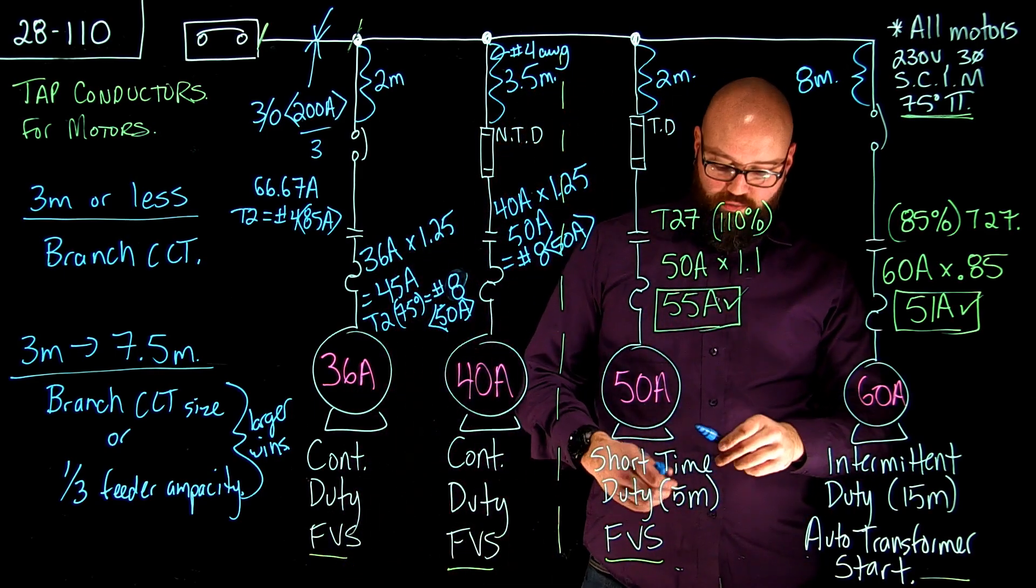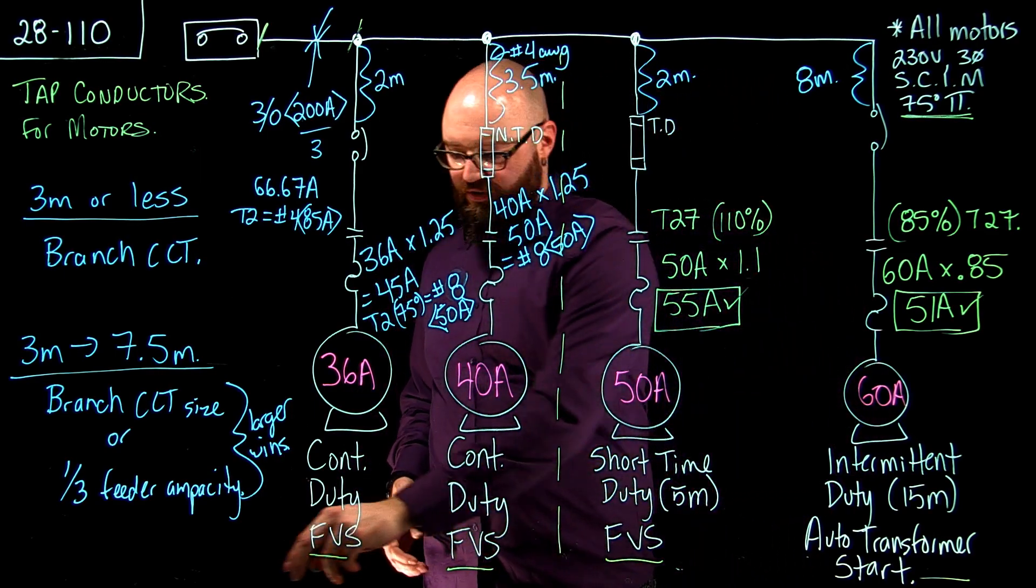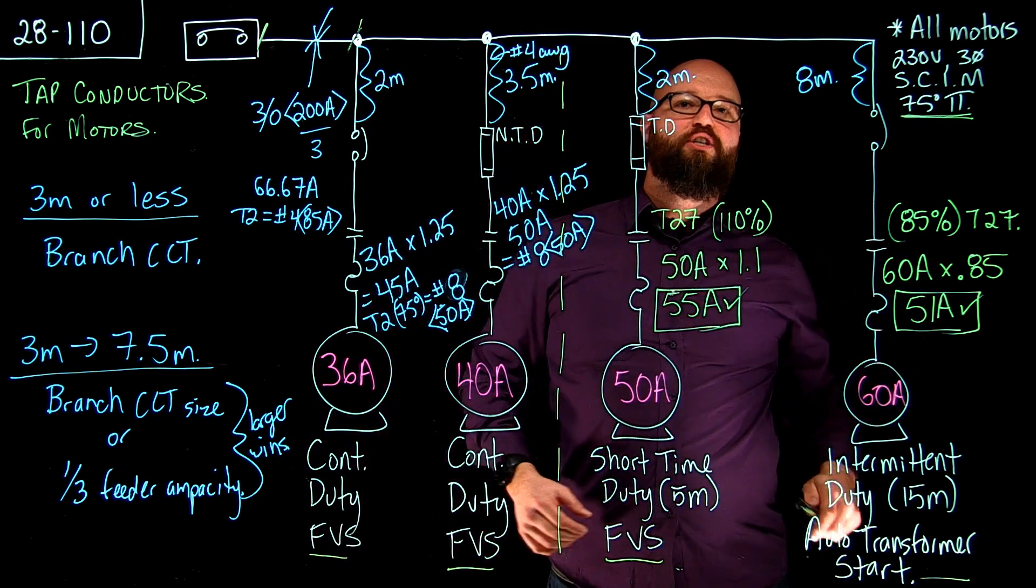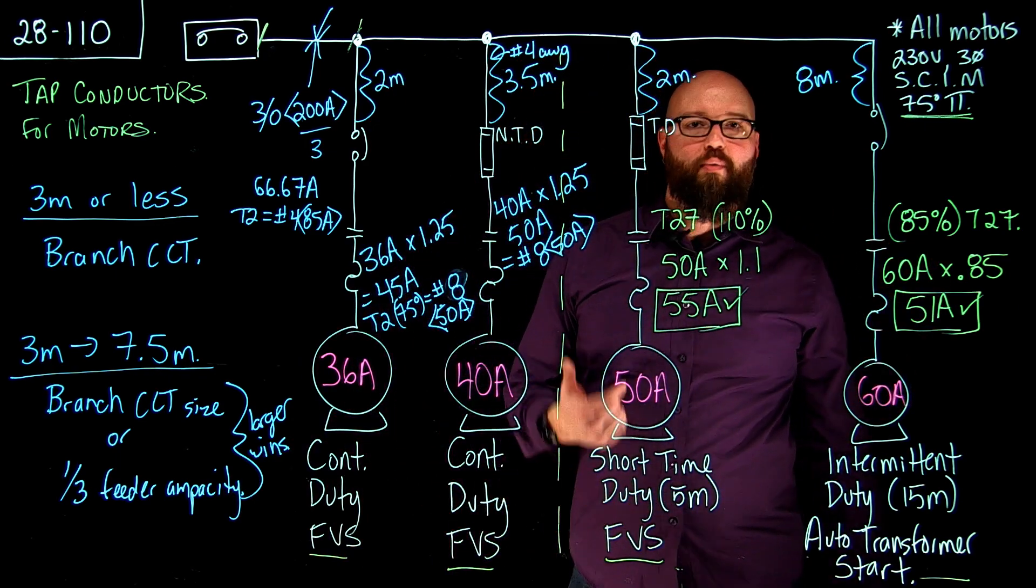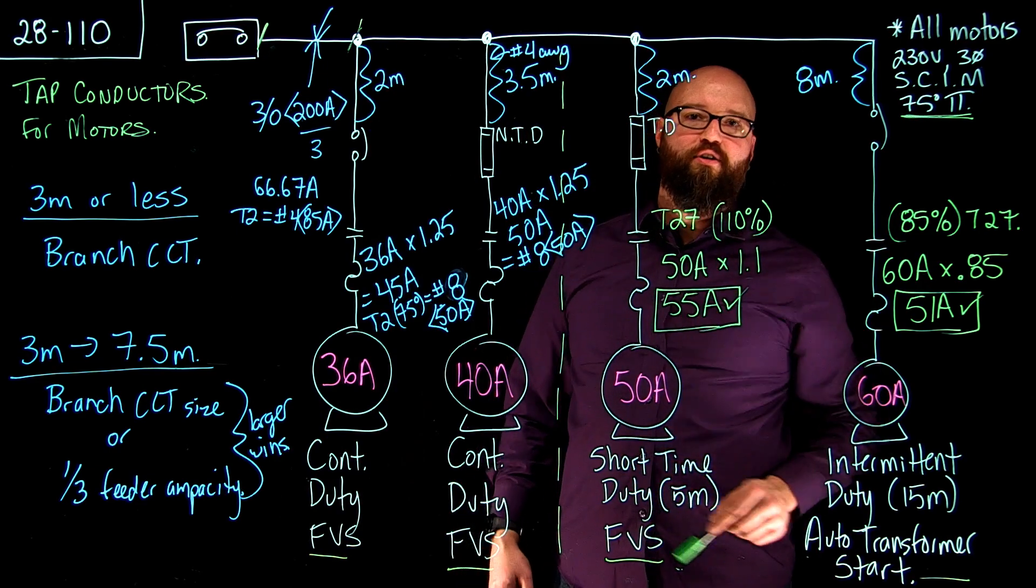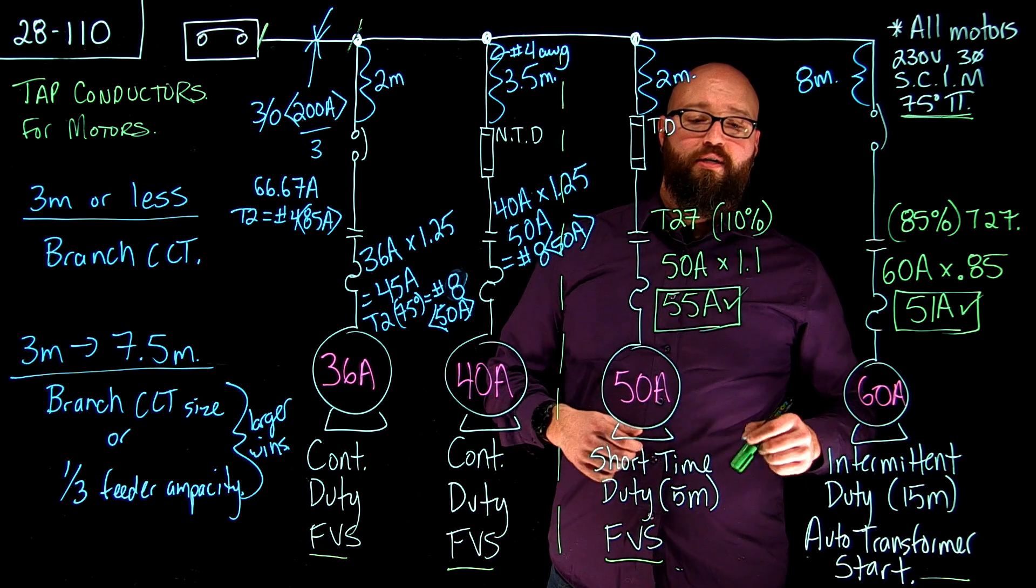Now we move into our non-continuous motors. I'm going to switch to a different color here. For our non-continuous motors I've left the calculations up from the previous video where we went to table 27 and we determined that for our short time duty of five minutes we had a 110% multiplier.